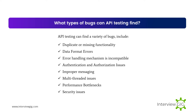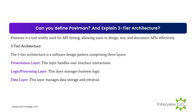Can you define Postman and explain three-tier architecture? Postman is a tool widely used for API testing, allowing users to design, test, and document APIs effectively. The three-tier architecture is a software design pattern comprising three layers: the presentation layer, which handles user interface interactions; the logic processing layer, which manages business logic; and the data layer, which manages data storage and retrieval.